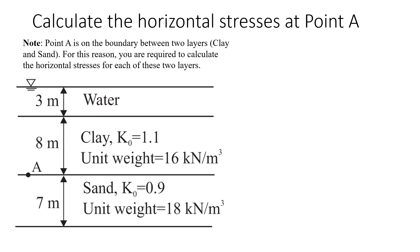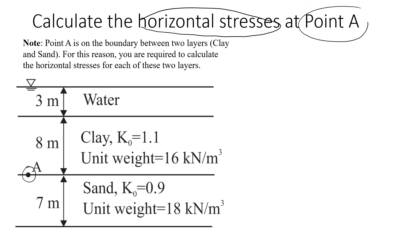Let's look at the final example, where we are required to estimate horizontal stresses at point A. Point A is right on the boundary between clay and sand. This is a special case — we estimate stresses at the boundary between two soil layers, so we will have two answers: one using the K0 for the clay layer and one using the K0 for the sand layer.